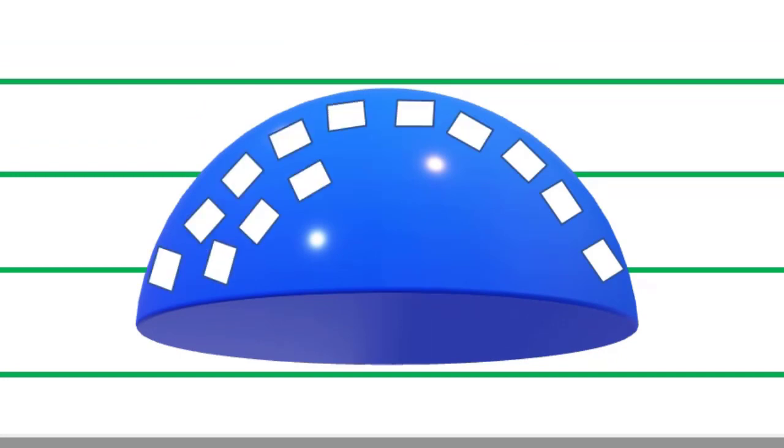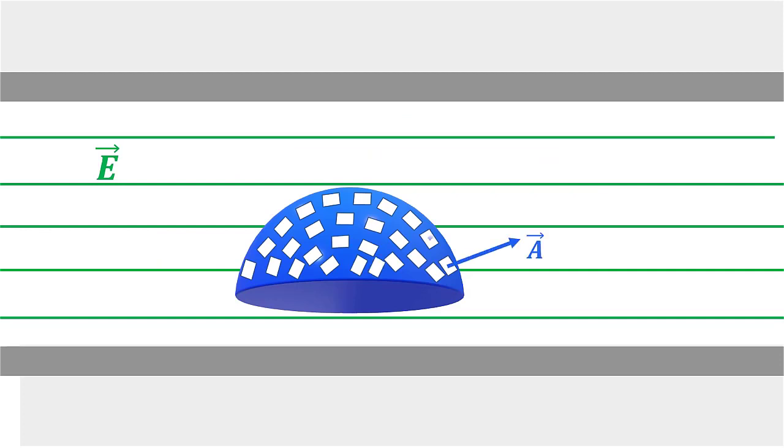How to associate a vector to the area of a curved surface? We imagine dividing the surface into a large number of very small area elements. Thus, small area element may be treated as planar and a vector associated with it.